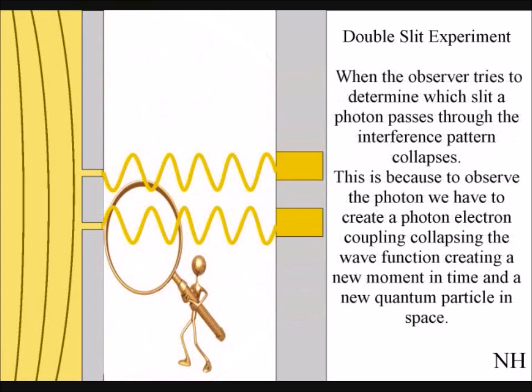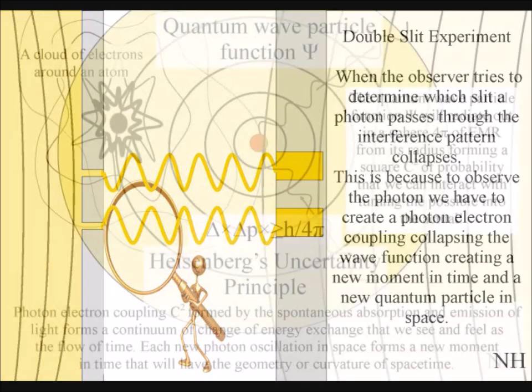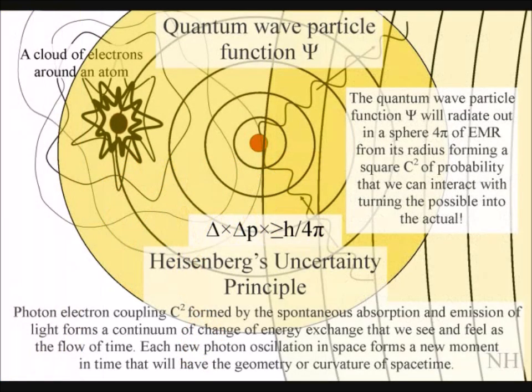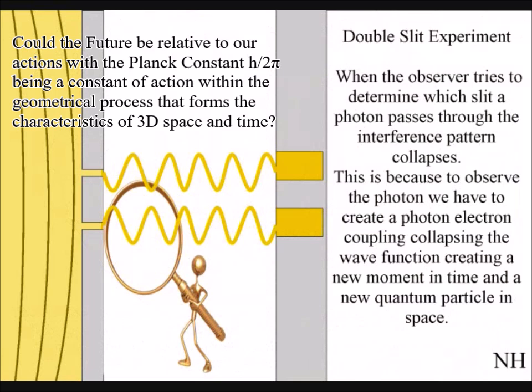Just as in Newtonian physics, only when an external force comes in contact with the light does the interference pattern collapse. When an observer tries to see which slit the photon went through by turning on an electronic detector, forming a new photon-electron coupling, the interference pattern collapses. This is because the photon-electron coupling represents a new moment in time, the moment of now, within the reference frame of the experiment.